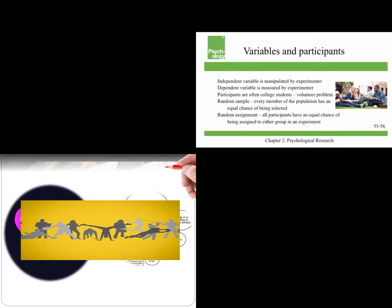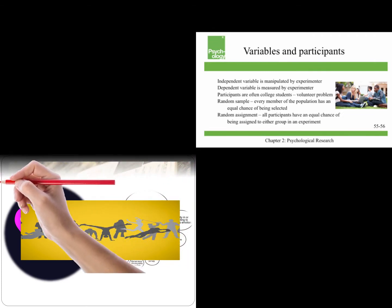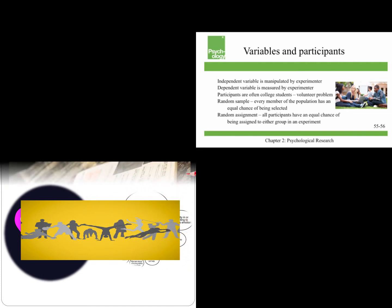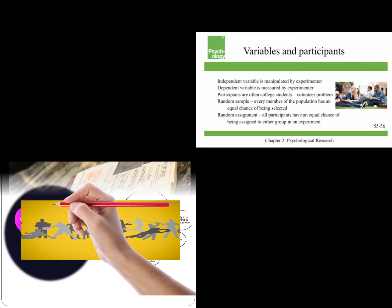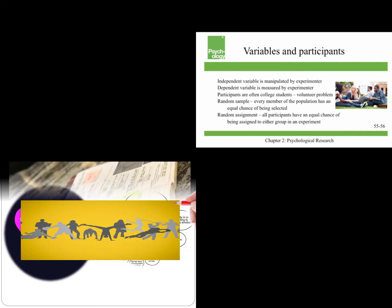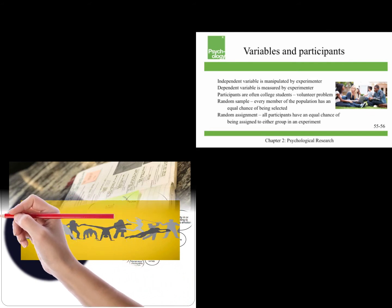An independent variable is manipulated by the experimenter, and a dependent variable is measured by the experimenter. So one of the reasons why it's called a dependent variable is because its value is thought to be dependent on whether you receive the independent variable or not.